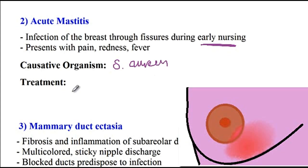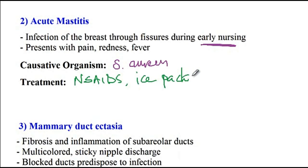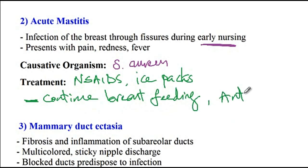For treatment, pain management can include NSAIDs like ibuprofen or ice packs. One important note is that the mother must continue breastfeeding with the infected breast, because breastfeeding pumps the bacteria out and helps resolve the acute mastitis. Finally, antibiotics directed at Staphylococcus aureus can be provided.